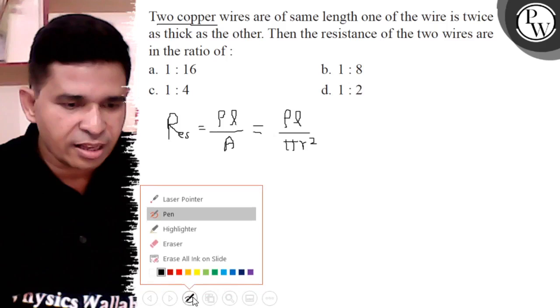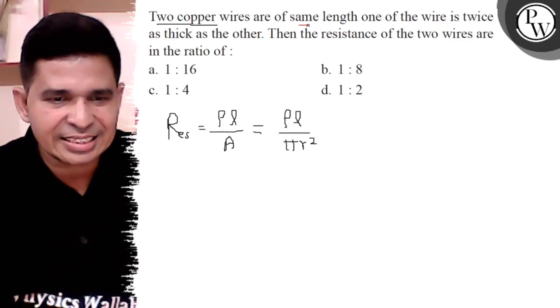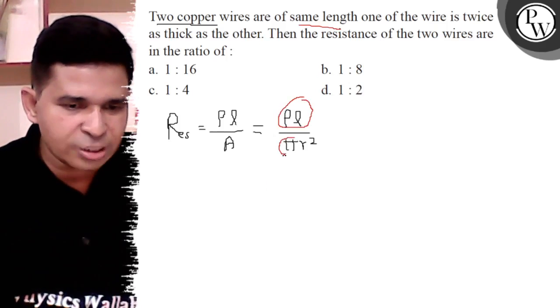So definitely, which is constant. Rho is constant and length is same, so rho and L is constant, pi is already constant.